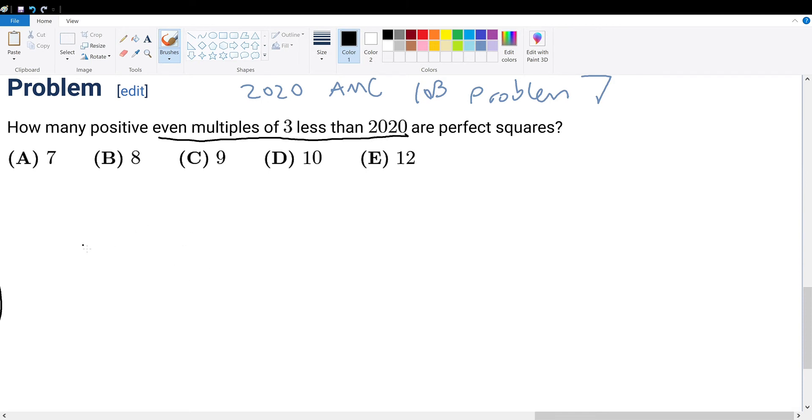So we know that if it's an even multiple of 3 and it's a perfect square, it has to be a multiple of 6 as well.